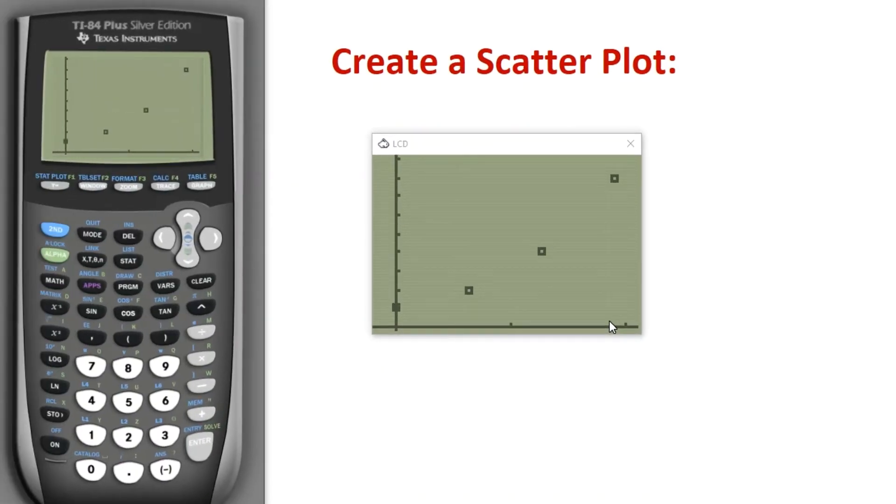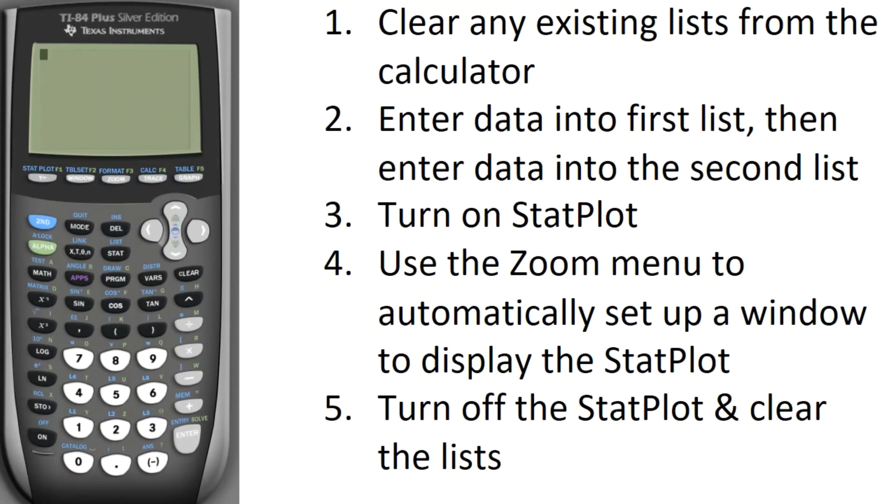For the graphing portion of this tutorial, we're going to learn how to create a scatter plot. We're going to go through this process using 5 steps. We're going to clear any existing lists out of the calculator, put data into list 1, put data into list 2,